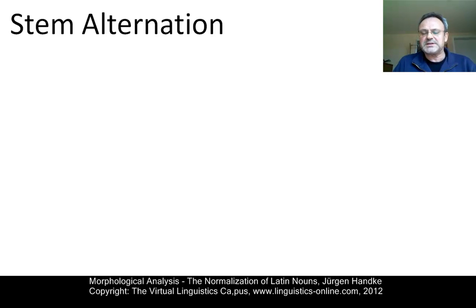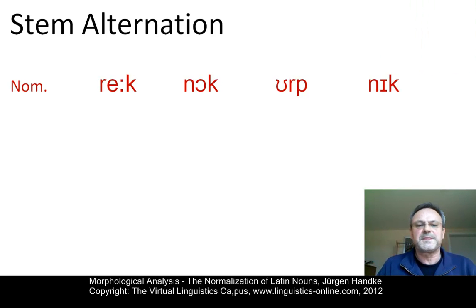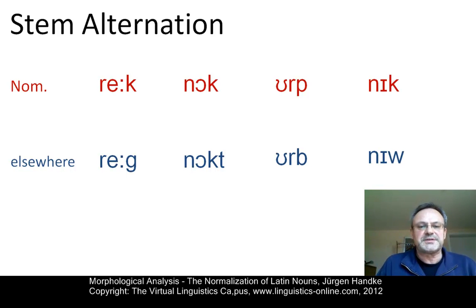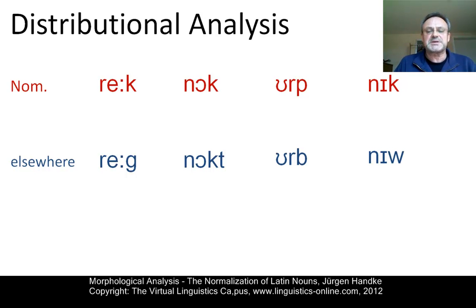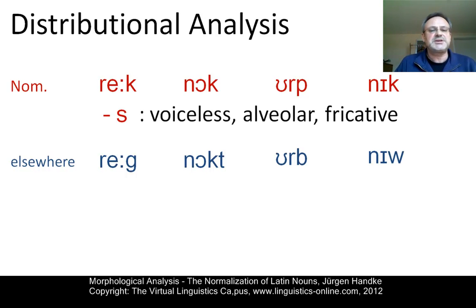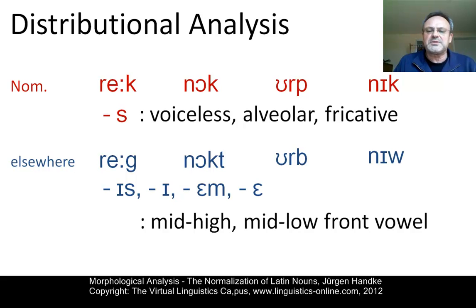Looking at the stems, we can clearly see that we have a different form in the nominative case, and the remaining cases are realized by the same form. The genitive, dative, accusative and ablative constitute a regular pattern, whereas the nominative forms are to some extent exceptional. We are confronted with an example of stem alternation. In the nominative we have rex, nox, urps, nix, and elsewhere we have reg, noct, urb and niu. The nominative forms are followed by s — a voiceless alveolar fricative — while the other forms occur before vowel-initial suffixes.